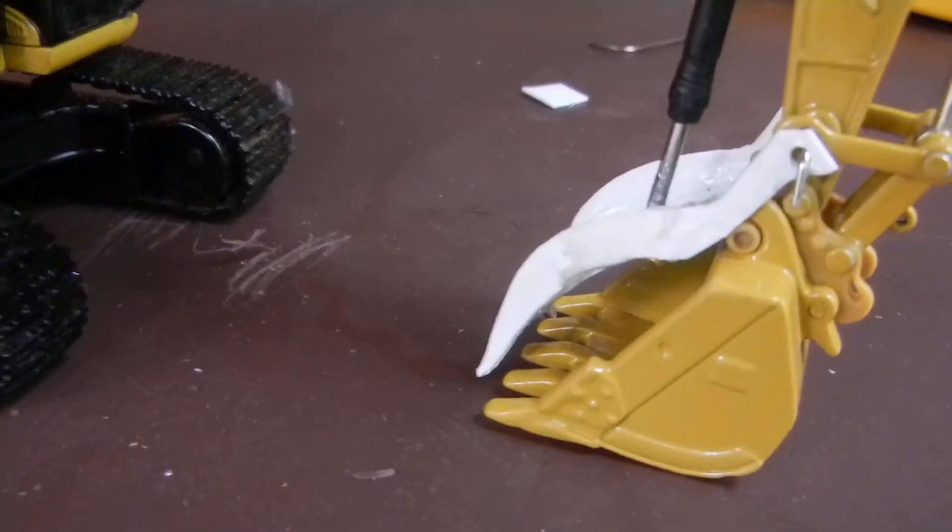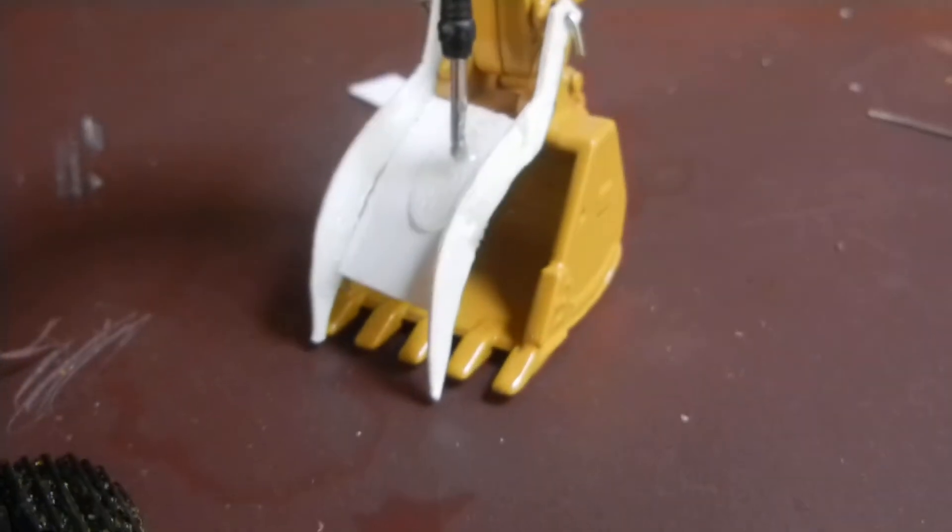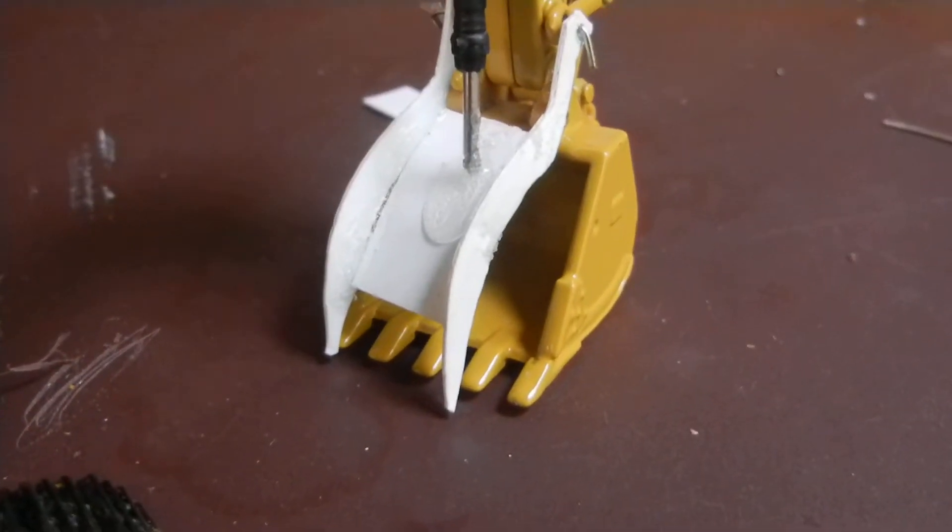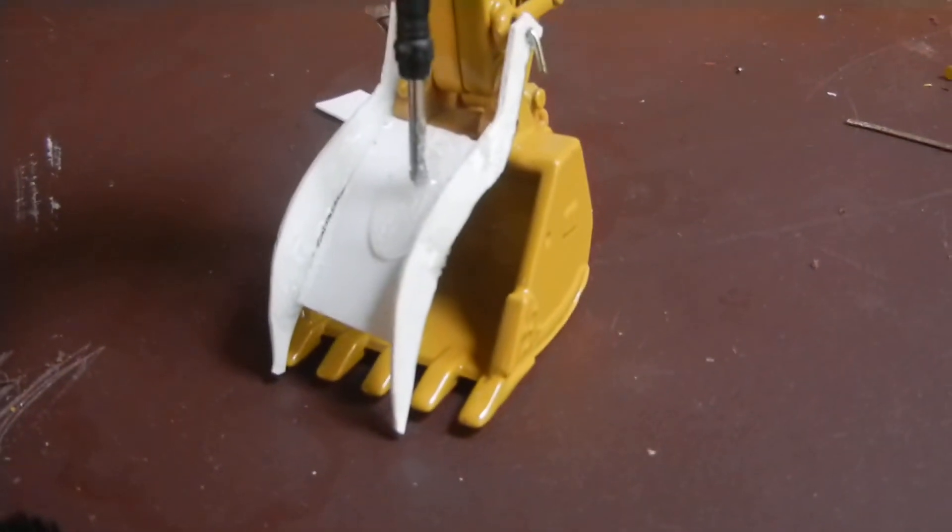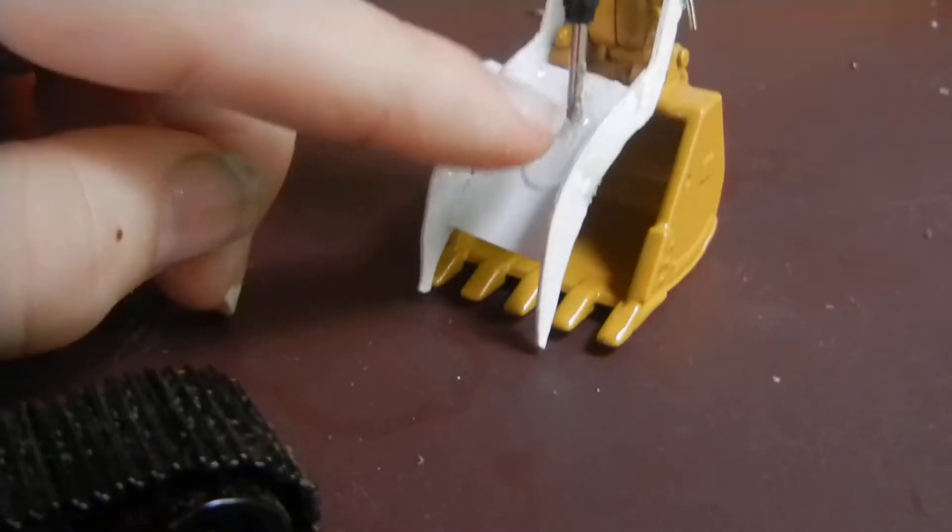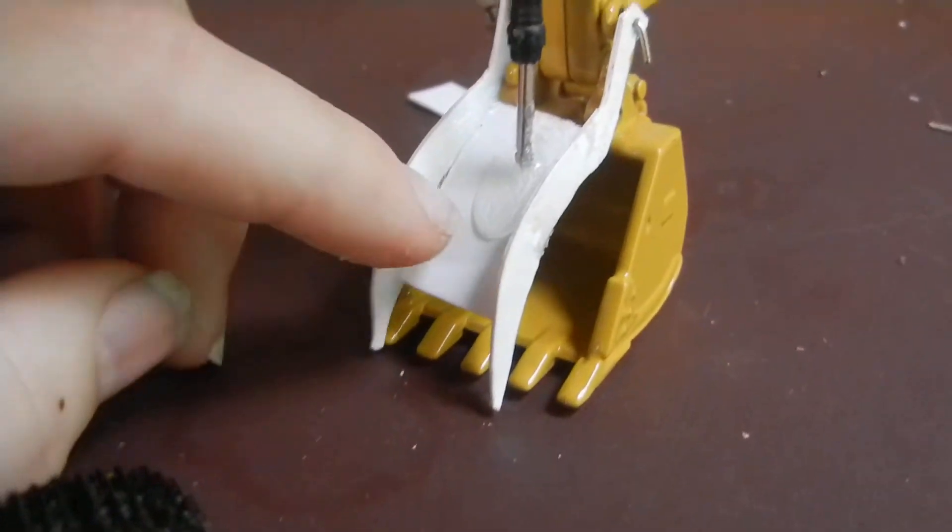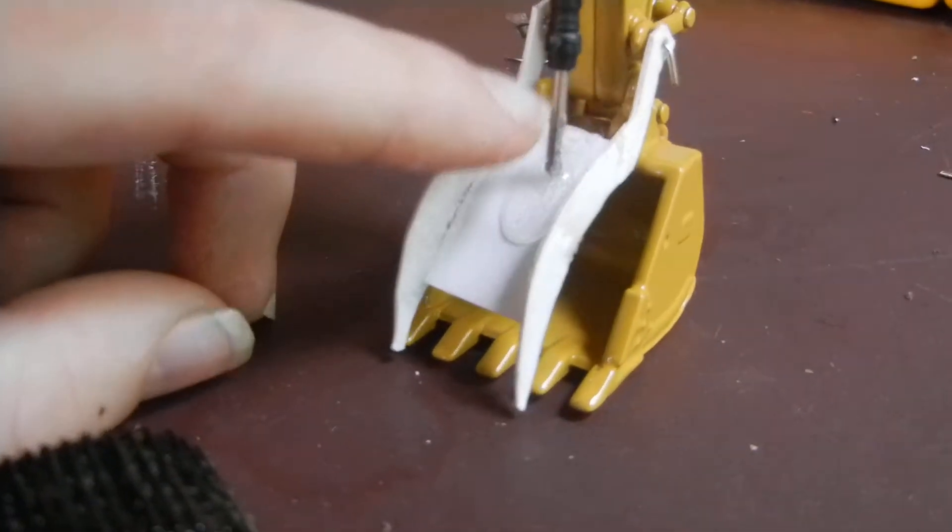But anyway, it's made out of .30 thickness sheet styrene. I glued the cylinder on there where you can see the drag glue from the accelerator. And it's on there.